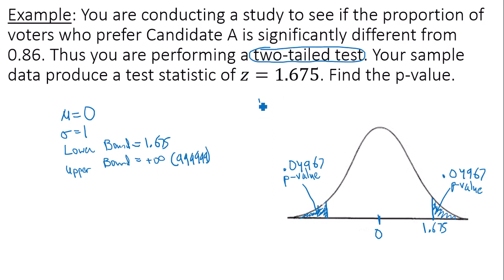So technically, all I have to do to find my p-value now is take that number or that area of one tail, 0.04967, the more decimal places you keep the better, and multiply it by 2, since we have two tails or two regions that we have to include the area for.